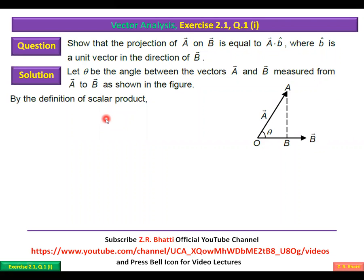By the definition of scalar product, this is a dot product which is A dot B, equals A magnitude, B magnitude, cos theta, where theta is the angle between A and B.